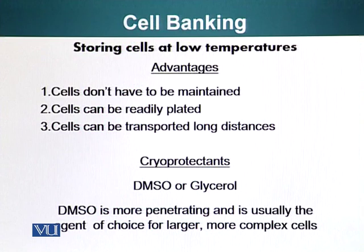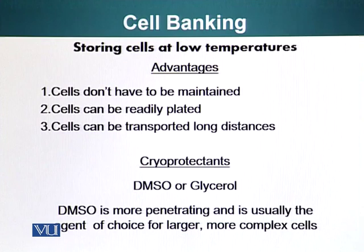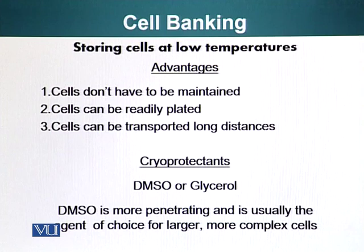One of the things we can do with a lot of cells is store them at lower temperatures — for example, in liquid nitrogen — and they can last a very long time. Why do we want to store cells? We don't have to maintain them. If you have cells in the incubator, you have to keep feeding them and passaging them, and viability will decrease if you keep passaging. If you store them, you can avoid all that, and you have a stock of cells you can plate anytime. Additionally, if you have frozen your cells, you can also transport them long distances or ship them.